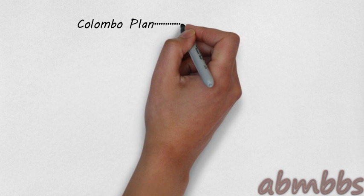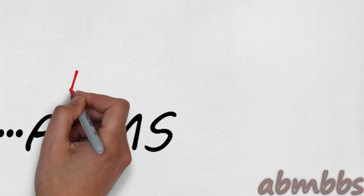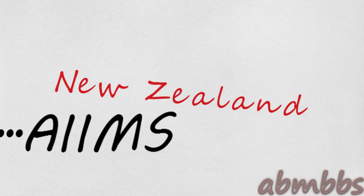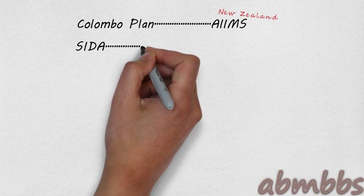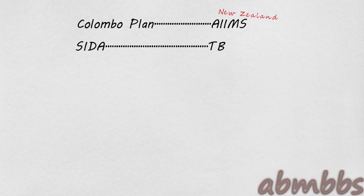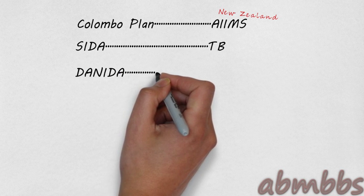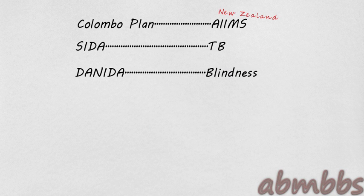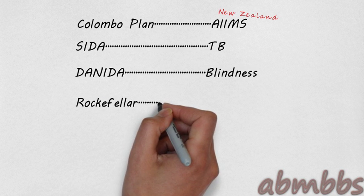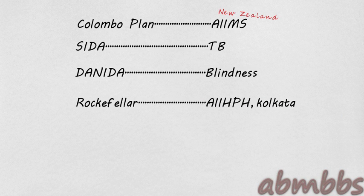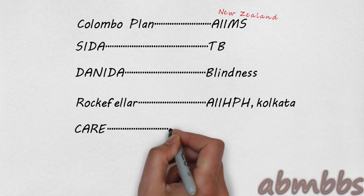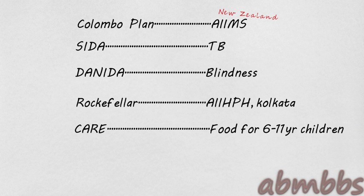There is the Colombo Plan under which AIIMS Delhi was established. New Zealand gave financial assistance for this project. There is the SIDA, or Swedish International Development Agency, which assisted the National TB Control Programme. There is Danida from Denmark, providing assistance for the National Blindness Control Programme. The Rockefeller Foundation set up the All India Institute of Hygiene and Public Health in Kolkata. The Care Foundation provides food for 6 to 11 year old children in India.